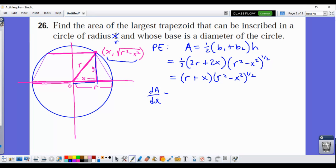So now we need the derivative, dA/dx. I'm going to do a product rule. So the derivative of the first part here is just 1. So we're going to get (r² - x²)^(1/2) plus, and then we're going to keep the (r + x) and take the derivative of the second part, which is going to be 1/2 times (r² - x²)^(-1/2) times the derivative of the inside, which is -2x.